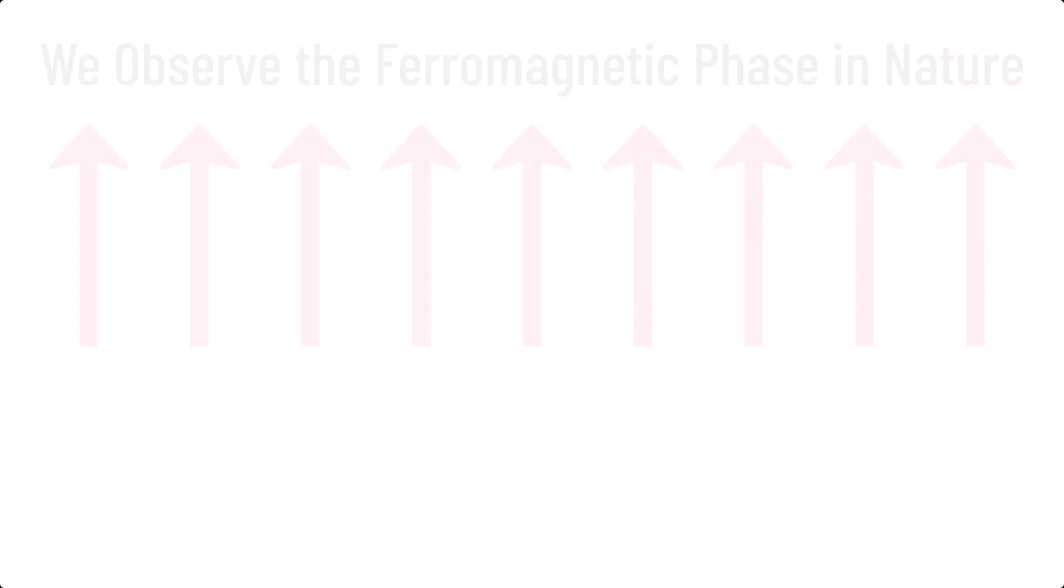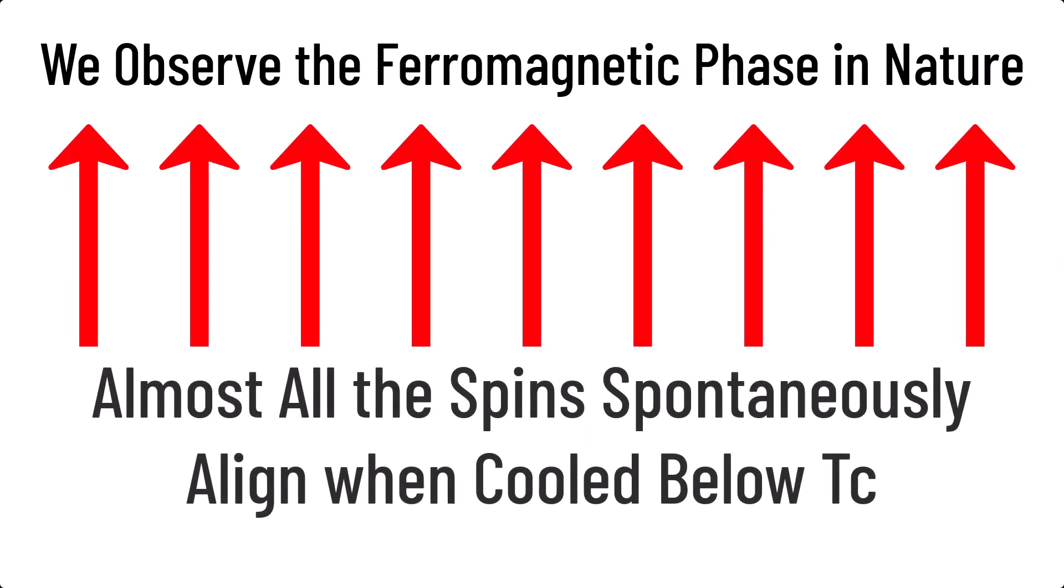However, when cooled below the Curie temperature, these paramagnets spontaneously have their spins align in a single direction, giving them net magnetization and becoming ferromagnetic. This process is known as spontaneous symmetry breaking, and is of paramount importance.